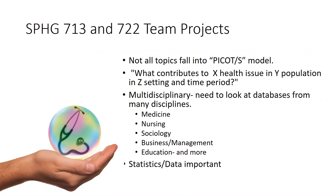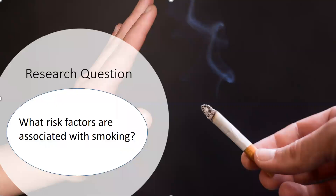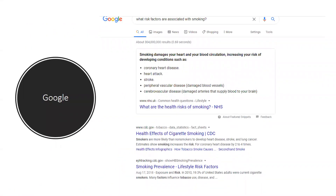When you're building your background section, it's important to locate information that shows how prevalent the problem is. Let's say you have a research question: what risk factors are associated with smoking? That's your first research question. A lot of students will go to Google and literally type in 'what risk factors are associated with smoking,' and you might find a couple of fact sheets, like lifestyle risk factors.